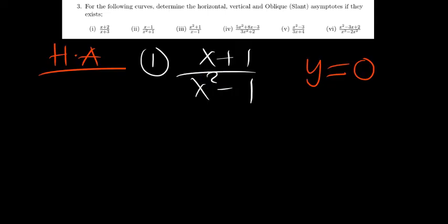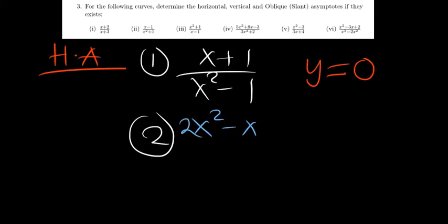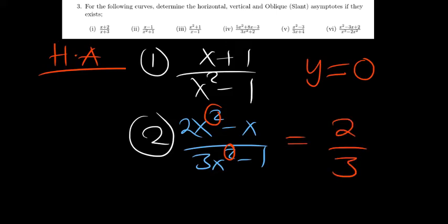The second case is where the degrees are equal. For example, you may have 2x squared minus x over 3x squared minus 1. Here you can see that the degrees are the same, so what you do is get the coefficients — which are 2 and 3 — the coefficients of the highest degrees of both the numerator and the denominator. So y equals 2 over 3 is the horizontal asymptote in this case.